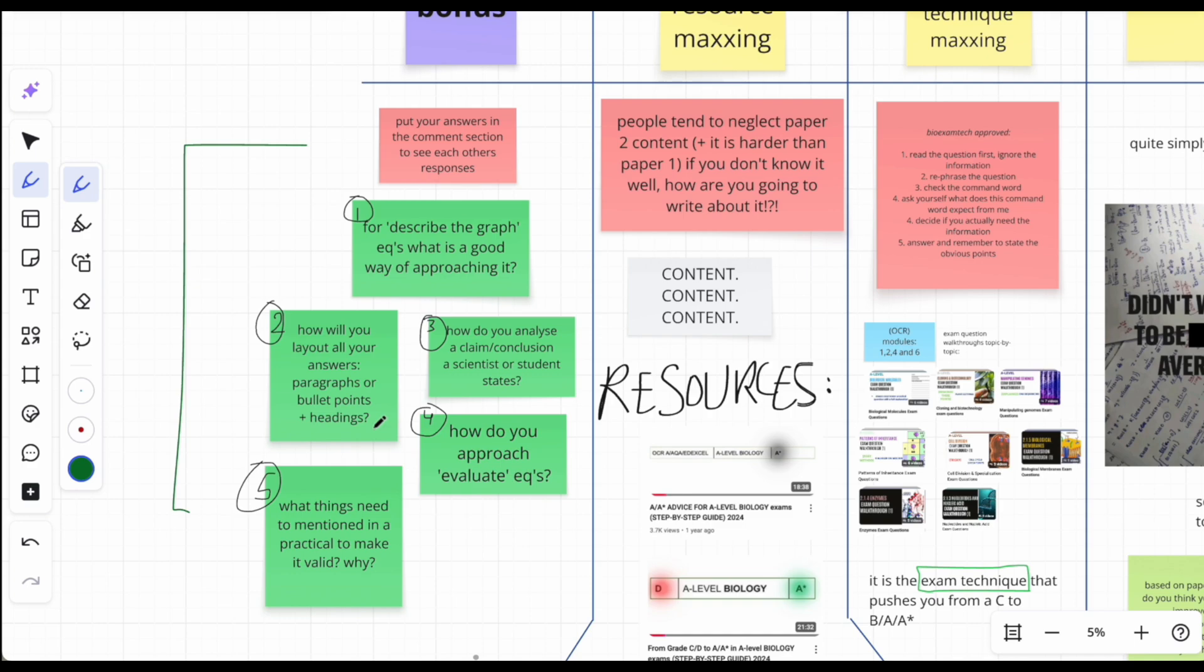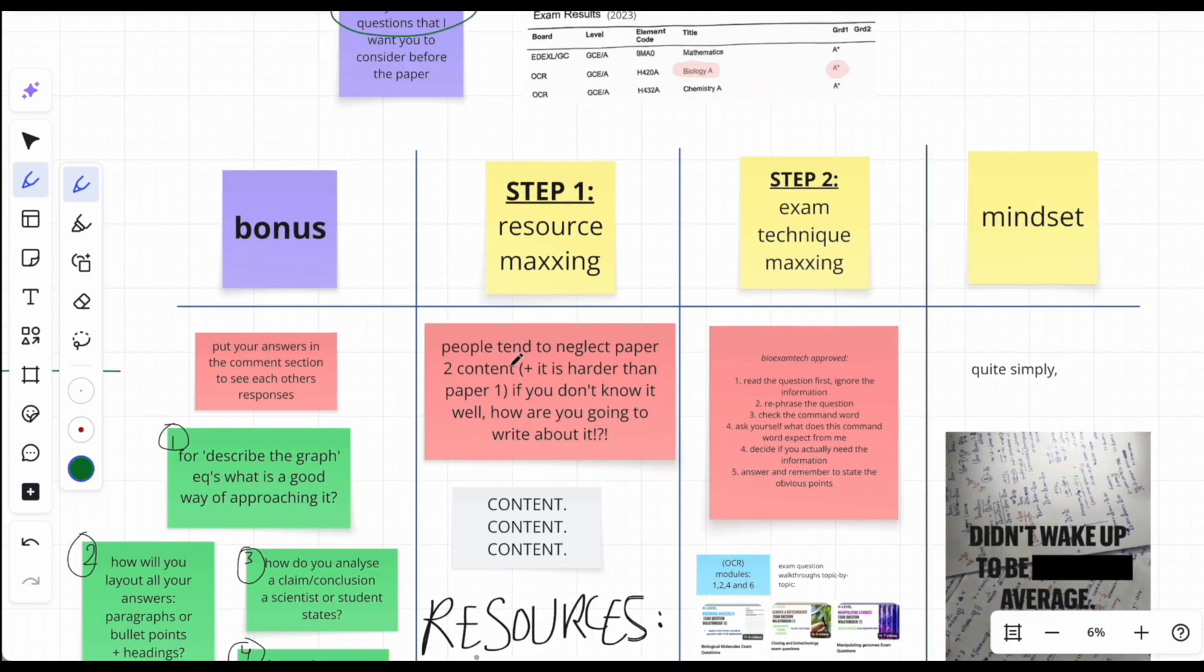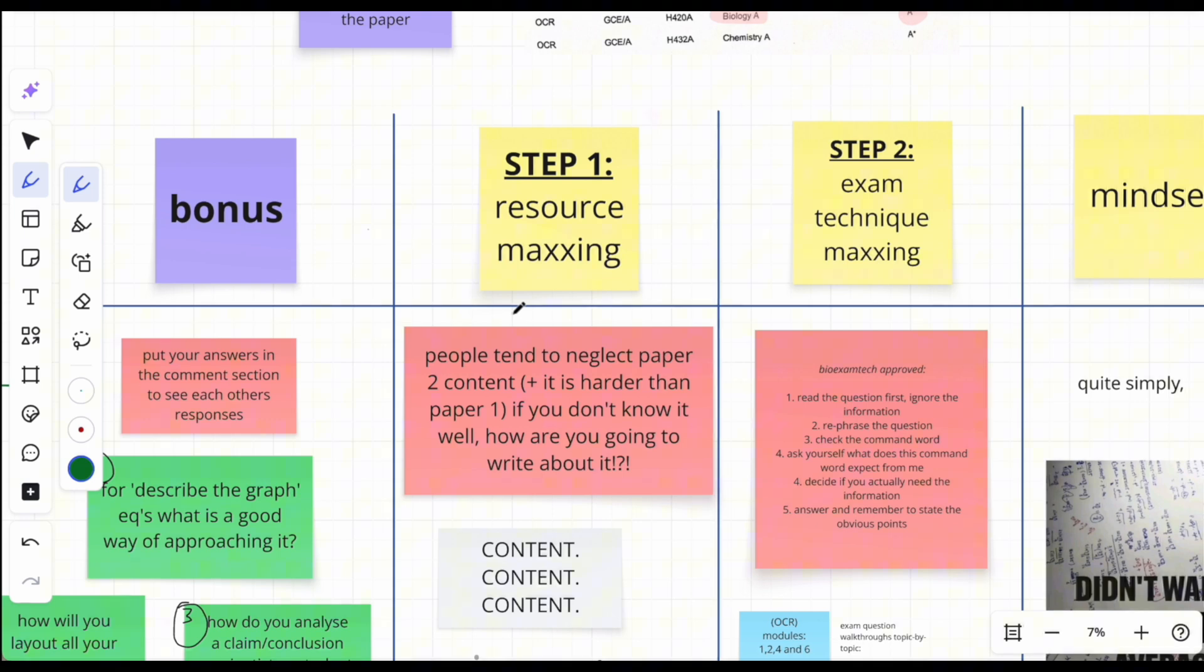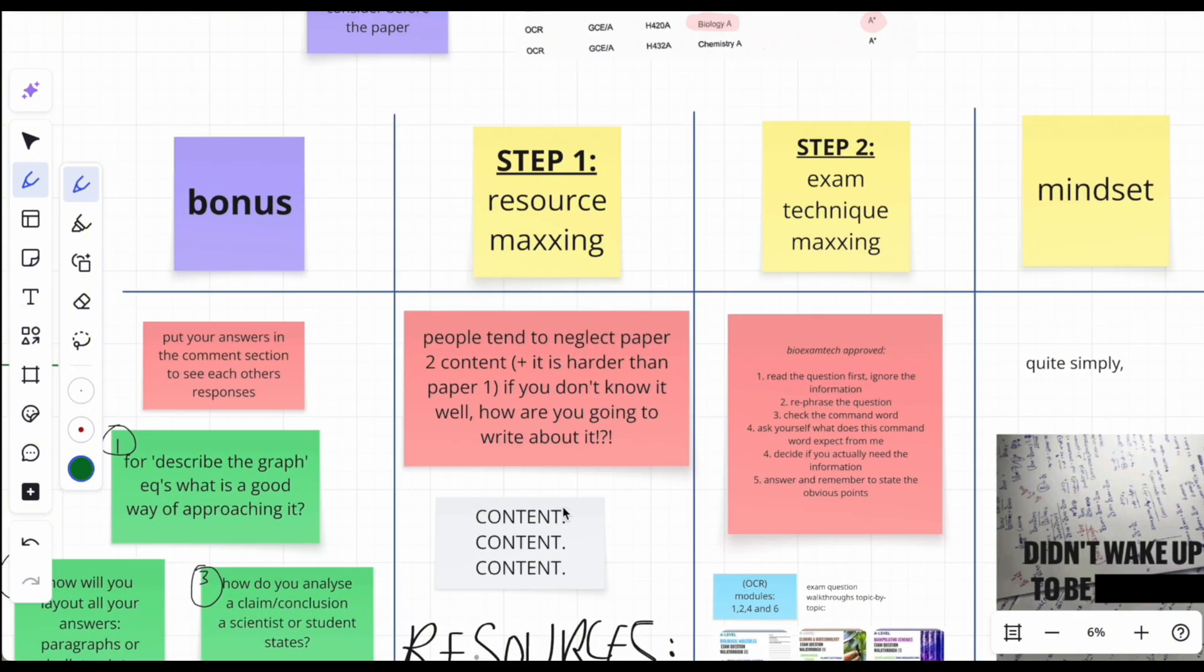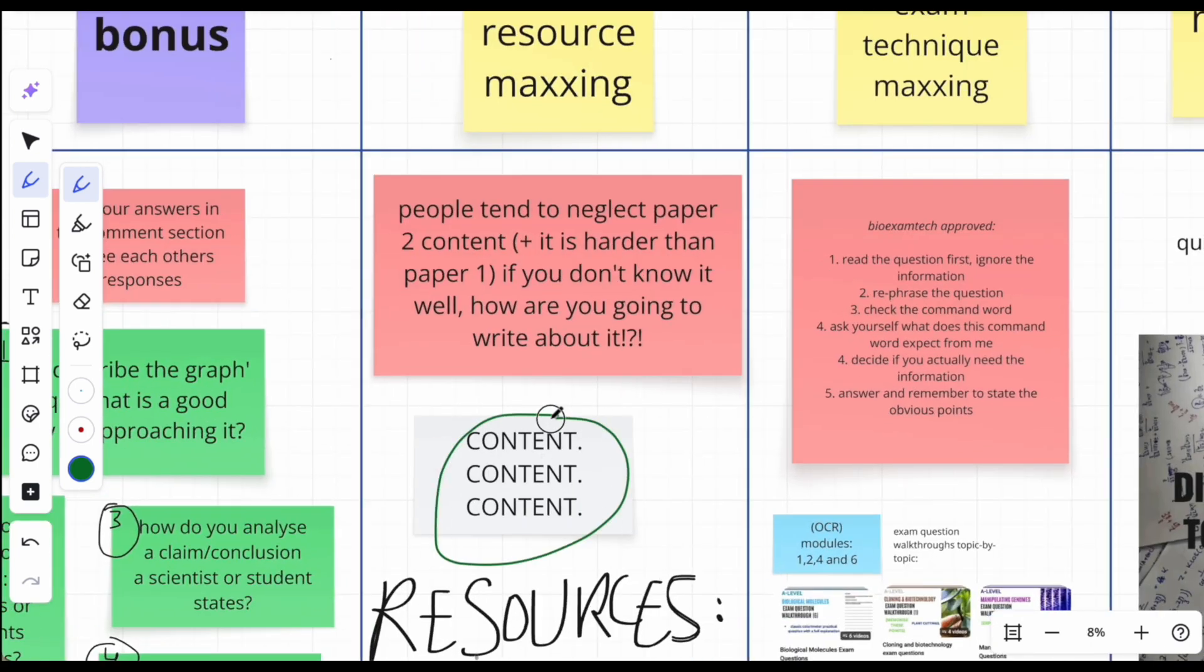And what things do you need to mention in order for a practical to be valid and why is it that those certain things are mentioned? I look forward to seeing your comments down below. And you know what, if you don't know the answer to some of them, no problem, just say okay question three I don't know. Somebody else is going to comment on it. This community I absolutely adore, like you guys are amazing and you just are answering each other's questions, is actually so wholesome. We're all trying to win here. Anyways, let's begin. Step one, resource maxing. Paper two, in my opinion, and I just went through all the paper twos again just before recording this just to remind myself, it's very content heavy.